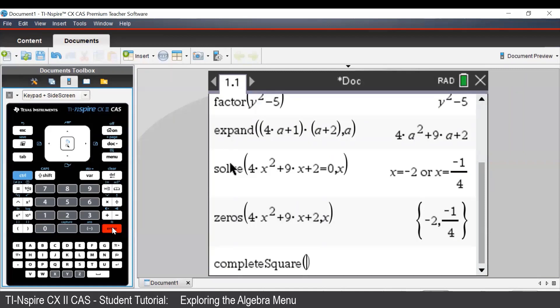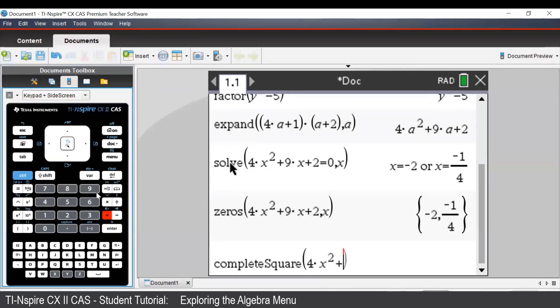To use this command, we enter in our expression. So again, we can type in 4x squared plus 9x plus 2. After that, we press the comma, followed by the pronumeral, and press enter.